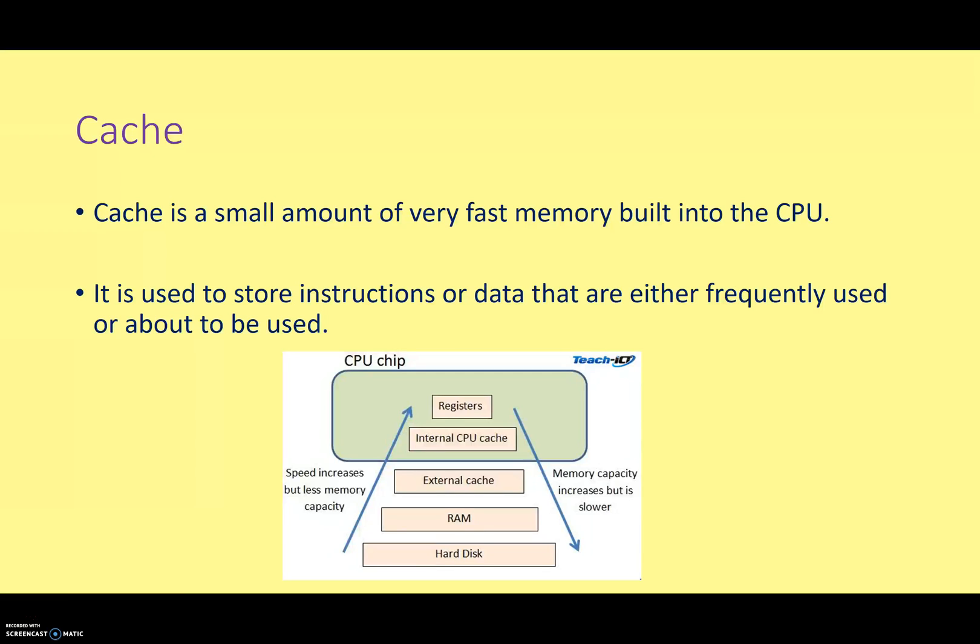Your computer will be running algorithms that will be trying to work out what instructions and data are going to be needed in the next very small section of time, and making sure that data and those instructions are held in the cache, ready to be fed into the registers as required. If there's stuff in the CPU cache that isn't going to be used in the next half a second, say, it'll get transferred back down to your RAM.